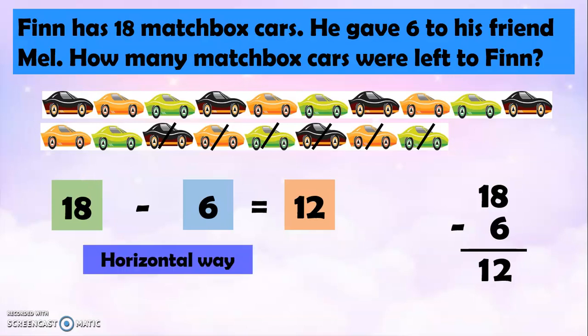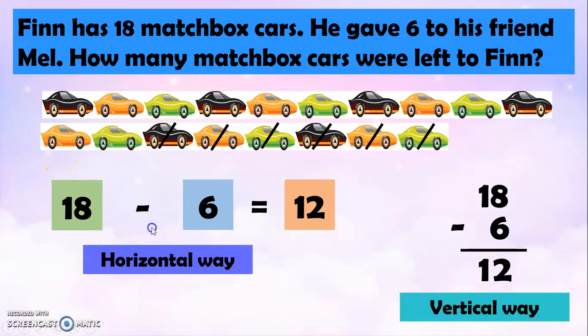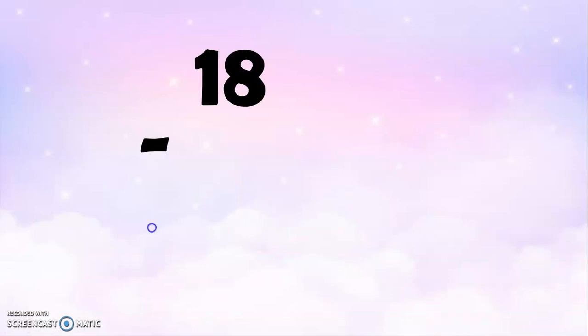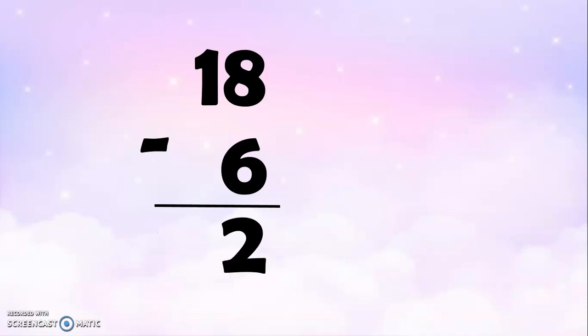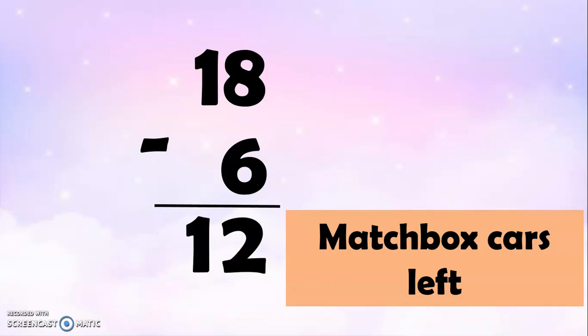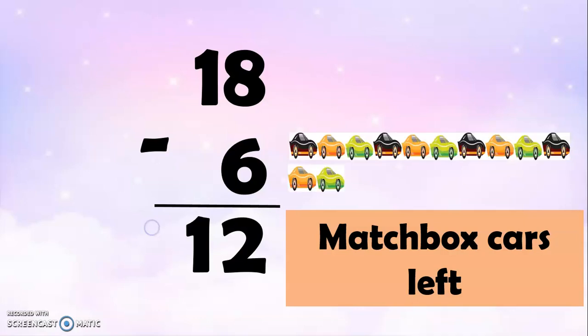Again, we can do subtraction in a horizontal way or vertical way. So, again, 18 minus 6: 8 minus 6, we have 2. And then, let's just bring down 1. So, there are 12 matchbox cans left for Finn.